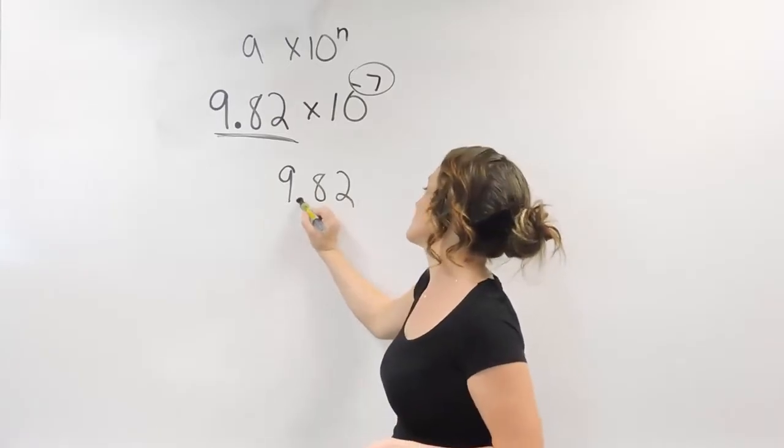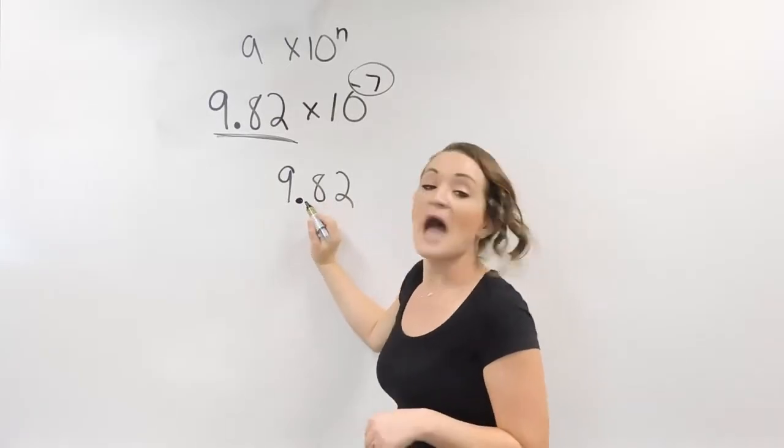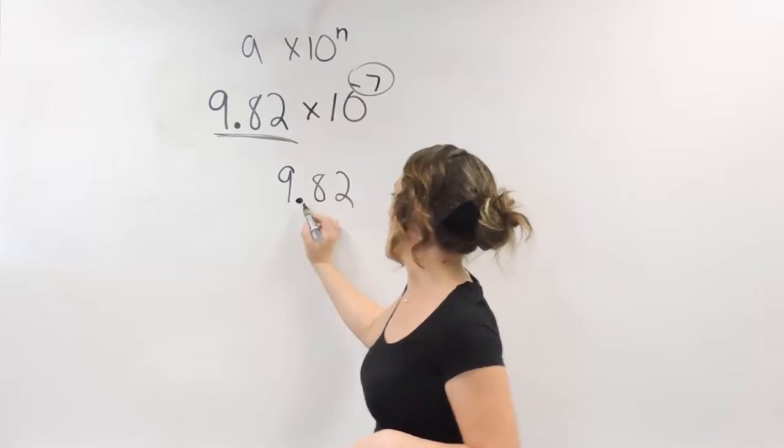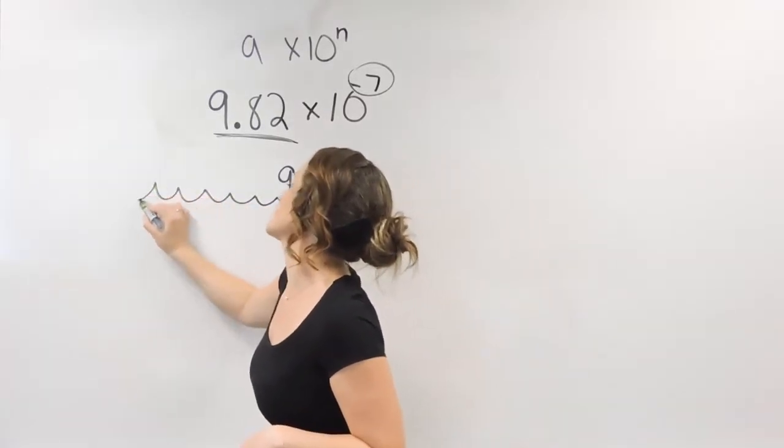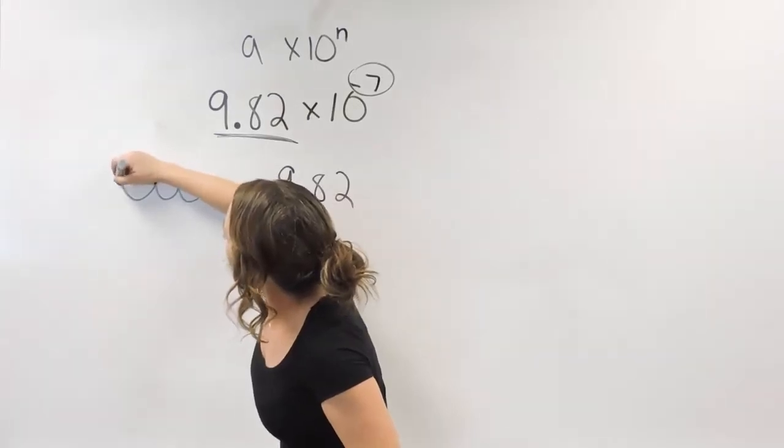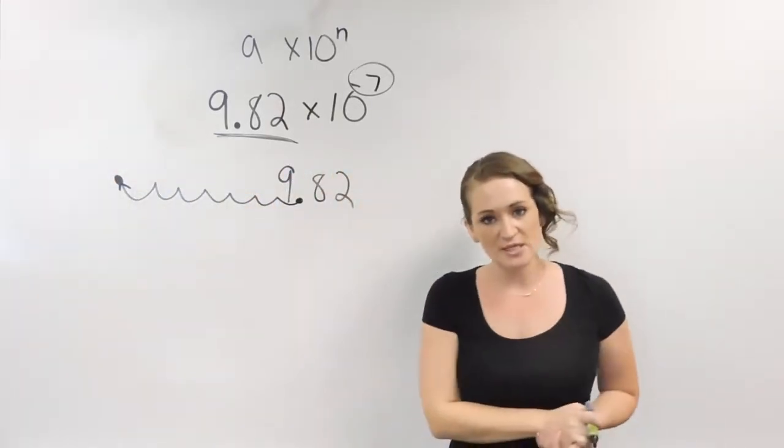So here's my decimal point between the 9 and the 8. I'm going to move it 7 times to the left. So 1, 2, 3, 4, 5, 6, 7. And that is where my new decimal point is going to go.